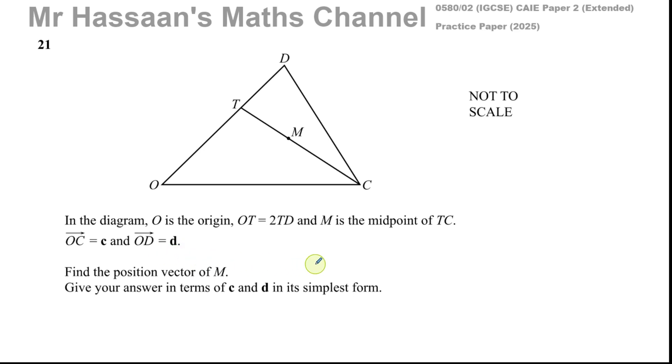Now here we have a question which could be any paper really, it's about vectors. It says in the diagram O is origin and the length OT is equal to twice the length TD. So this is like two parts, this is like one part, three parts all together.